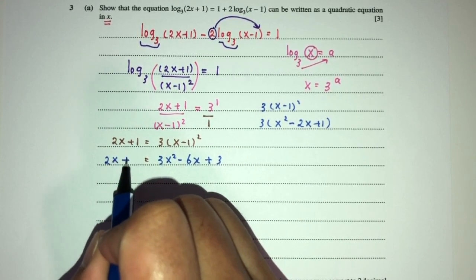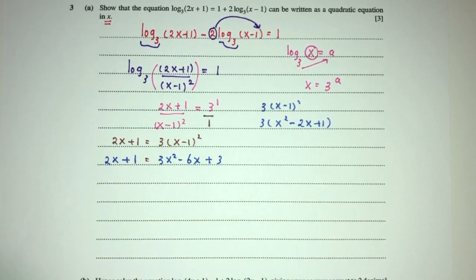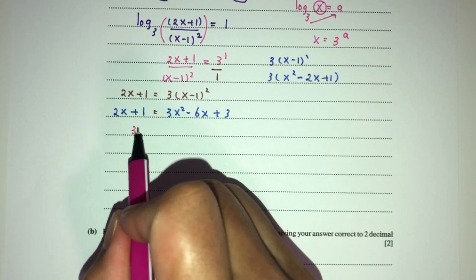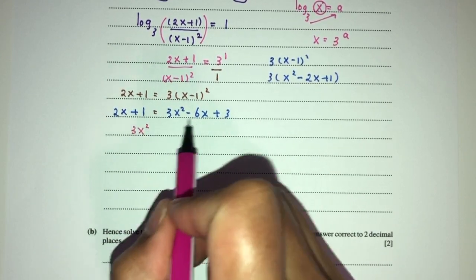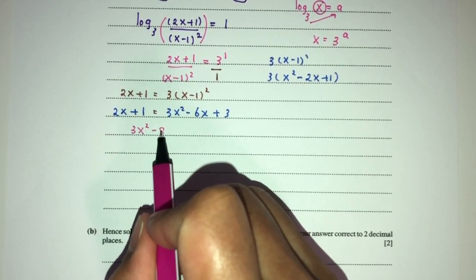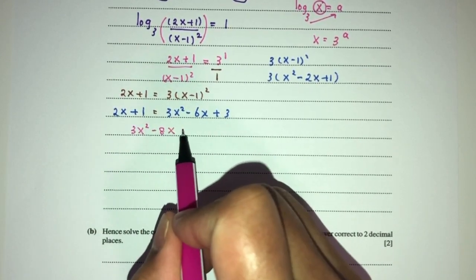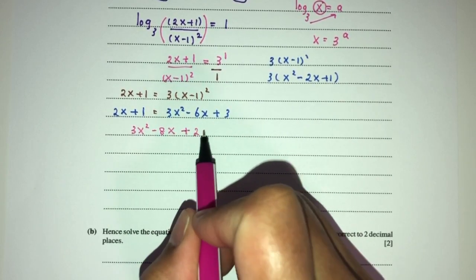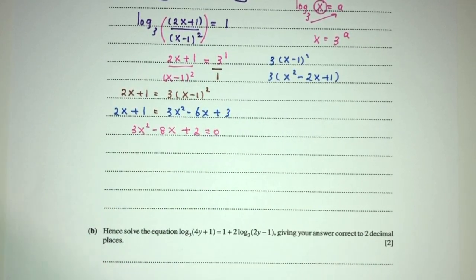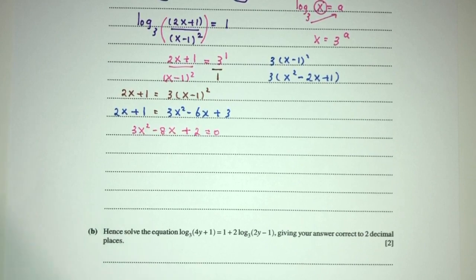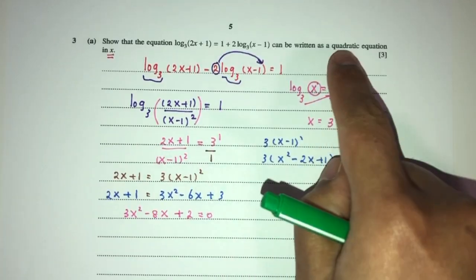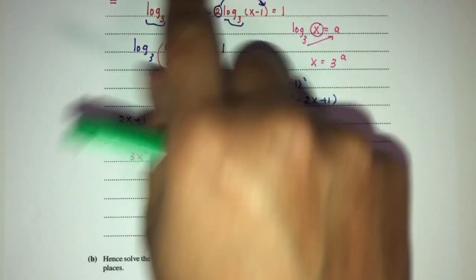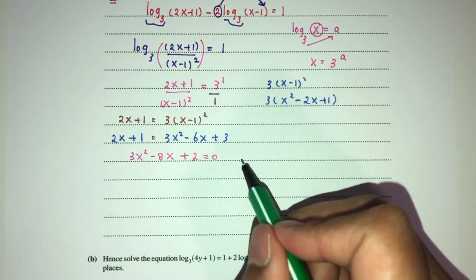Simplifying by sending everything to one side gives 3x² − 8x + 2 = 0. As required, we have shown this can be written as a quadratic equation in terms of x.